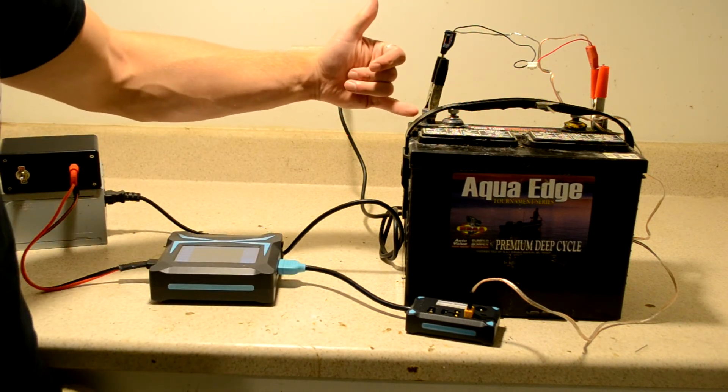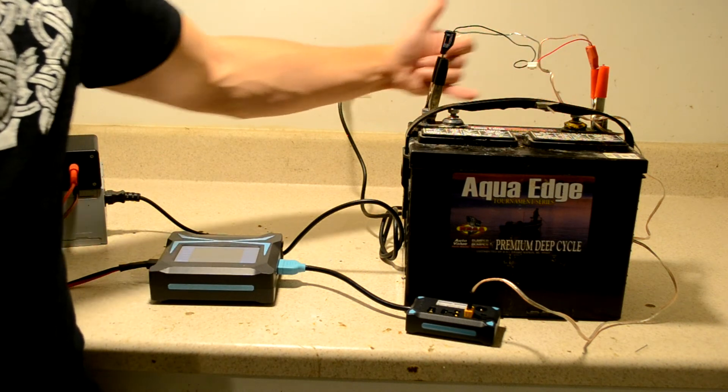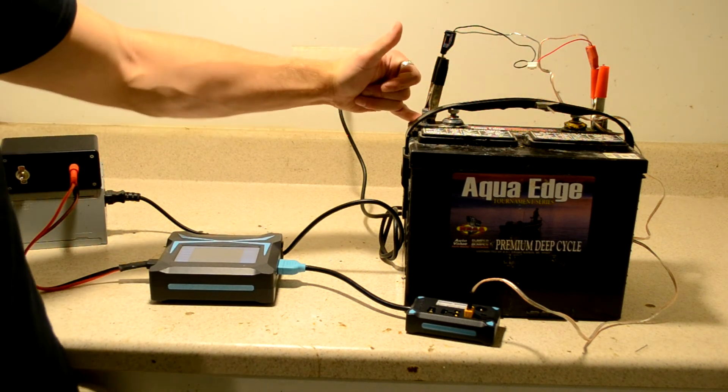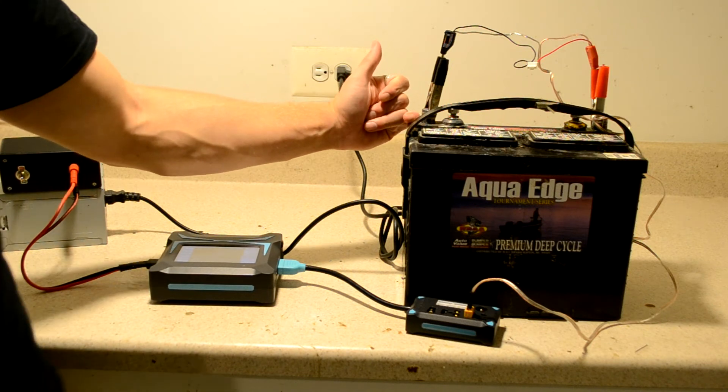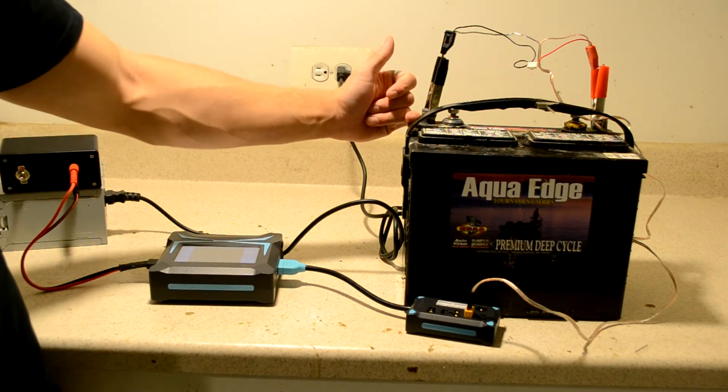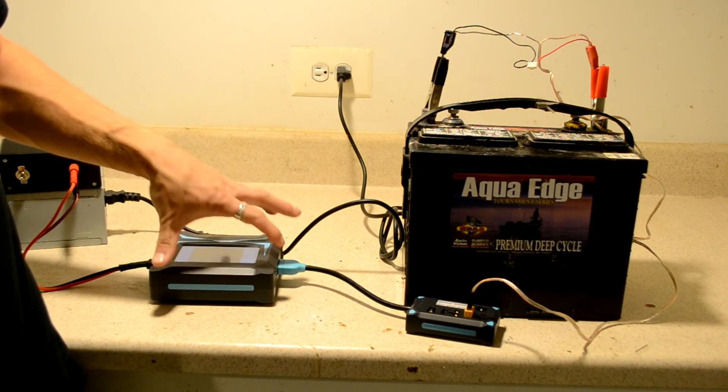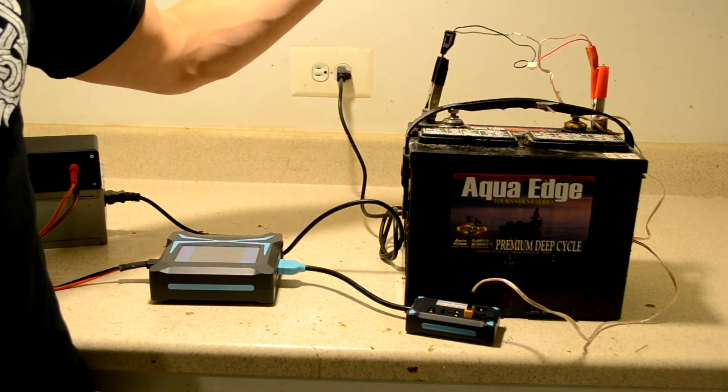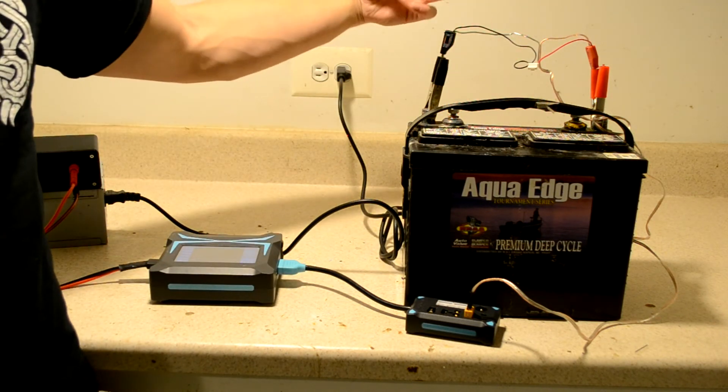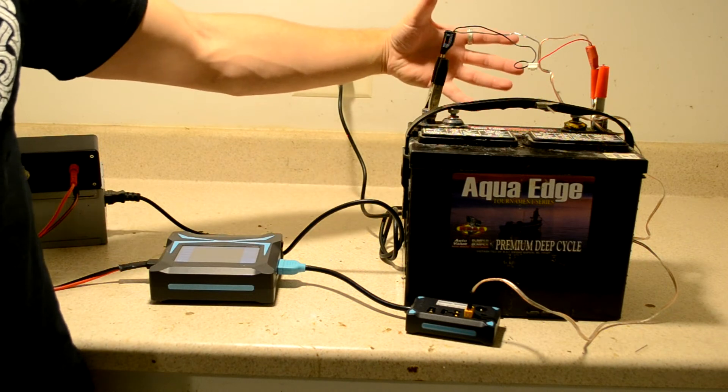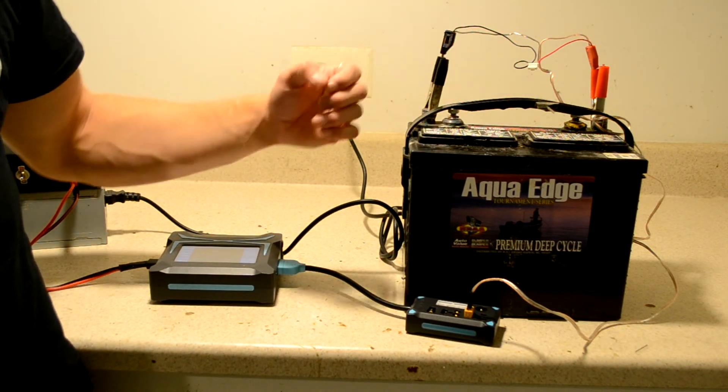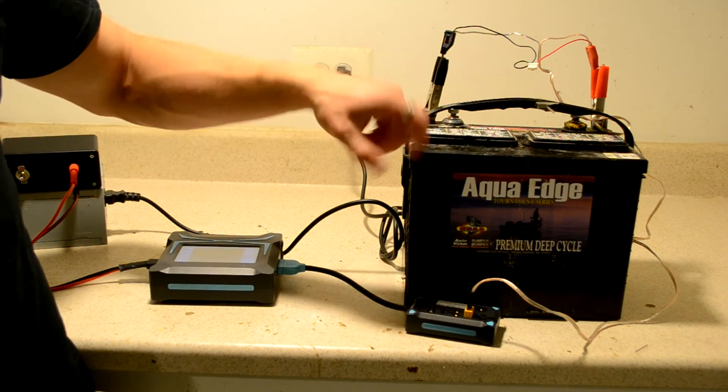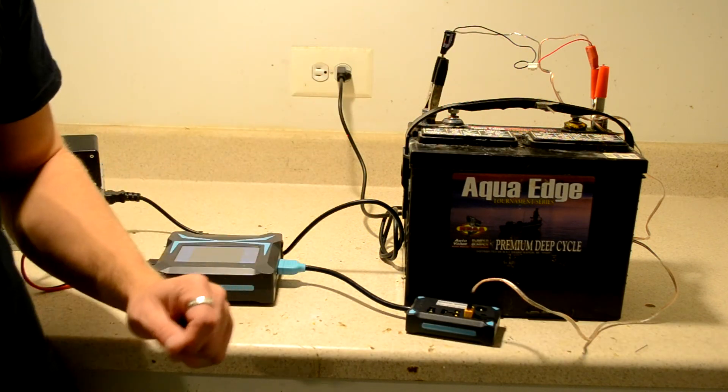Now, what they do is they connect between the positive and the negative, which sounds totally heretical, right? That's a short circuit. You can't do that. Well, not really, because what they do is they're in a little box, almost like this charger here, and they send a pulse high-frequency AC into the battery to develop just enough bubbles immediately on the plates, bubbles of hydrogen, to knock off the sulfate.